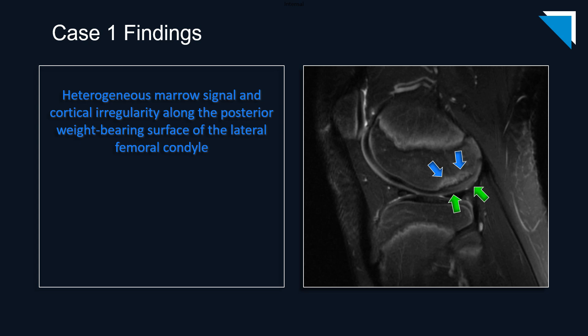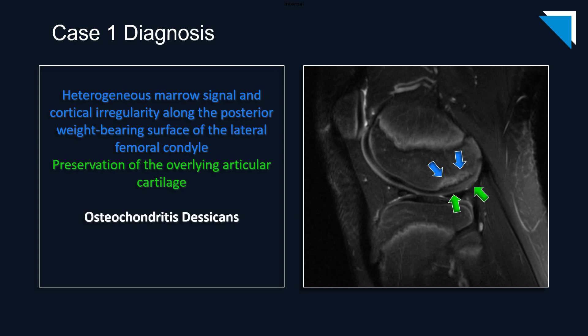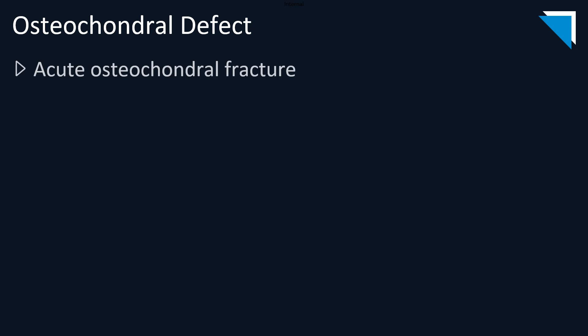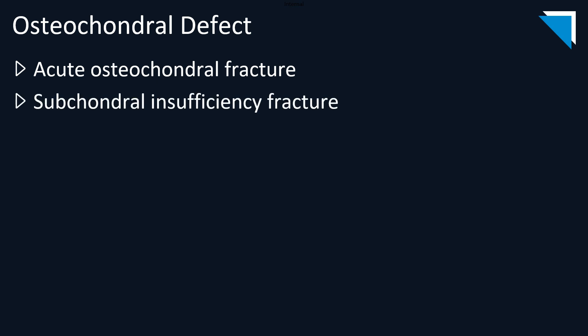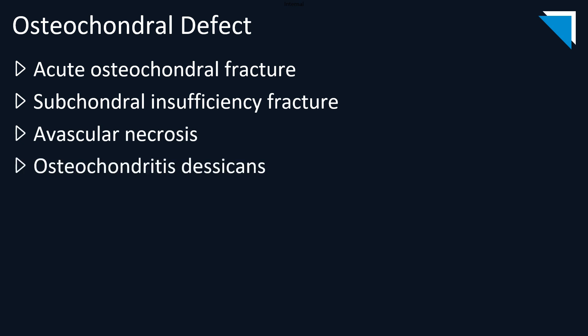It is important to note in this case that the overlying articular cartilage is grossly preserved. Our diagnosis in this case is osteochondritis dissecans. There is always a fair bit of uncertainty regarding what to call each of the various types of osteochondral defect, which is the umbrella term for these lesions. That term covers osteochondral fractures, subchondral insufficiency fractures, avascular necrosis, osteochondritis dissecans, as well as osteoarthrosis.